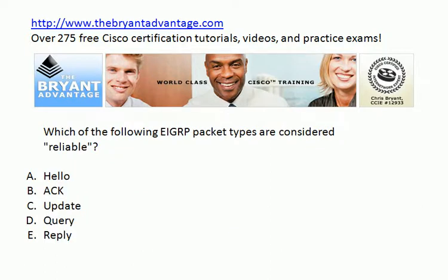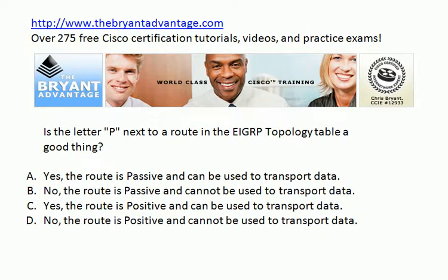Answer 9: all five packet types are important. Hellos and ACKs are considered unreliable, whereas update, query, and reply packets are considered reliable. Answer 10: the letter P stands for passive, and it is a good thing. It's a little counterintuitive because we tend to see either P for passive or A for active — and active sounds good and passive sounds bad, but it's actually quite the opposite. When an EIGRP route is marked as passive, that means it is not being currently recalculated and it can be used to transport data. If you see an A next to it, it stands for active, meaning the path is currently being calculated and cannot be used to transport data.